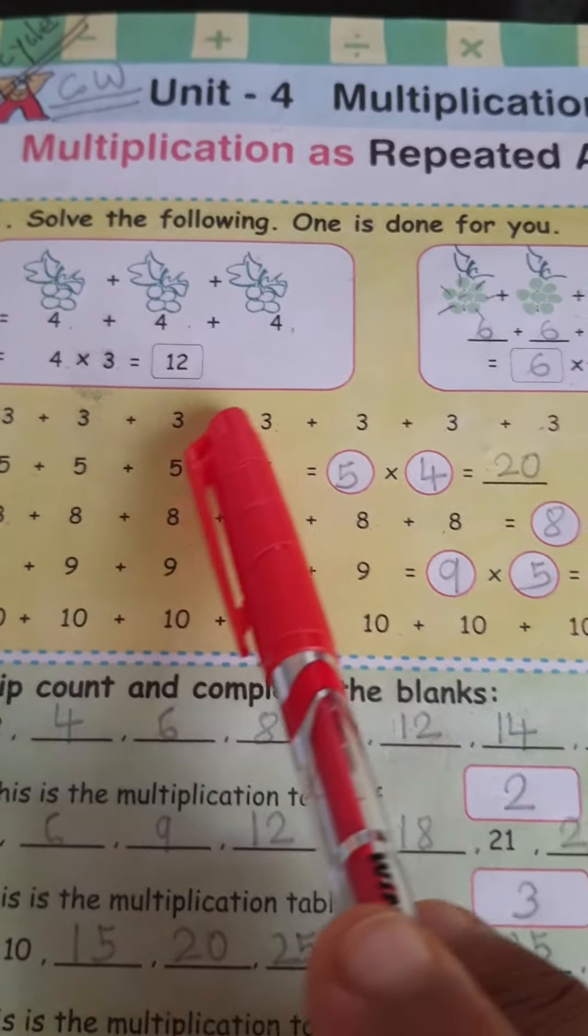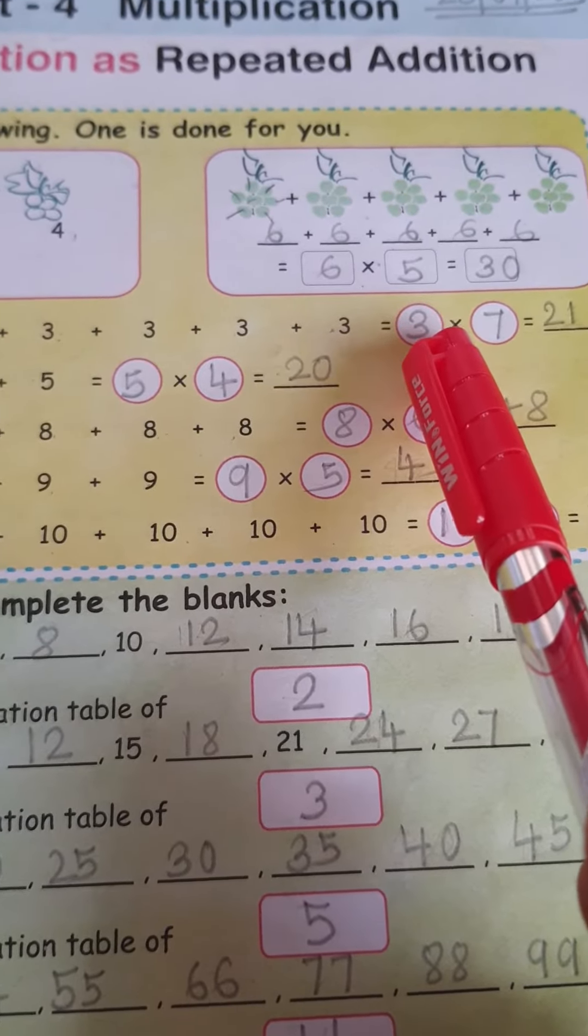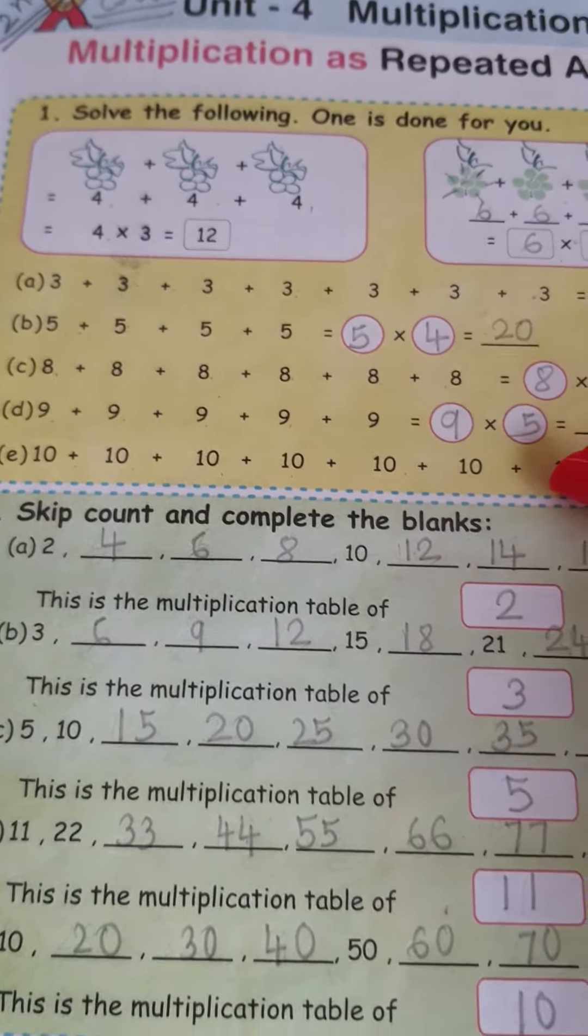Again, count how many times 3? 7 times. So, 3 multiply sign then 7. So, 3 7s are 21. Like this, you have to do this.